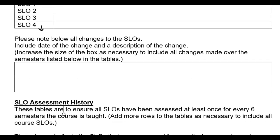The next section is a box where we record any changes made to the SLOs. If you want to change an SLO — and there's a section on that in the Canvas course for doing SLO and PLO assessments — you have to change the course outline of record, which means going through the curriculum committee and getting approval before you can institute those changes.